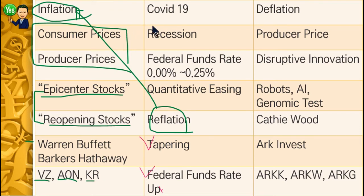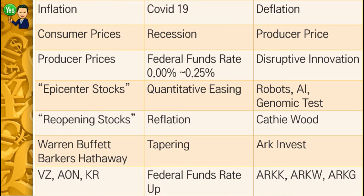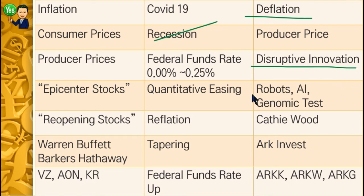Now let's talk about the other side — deflation. As I said, deflation means less cash in the market. One way we get deflation is through destructive innovation, not recession. Innovation means we have more robots and AI — artificial intelligence. They are making smart factories. Before, we relied on human labor. Now, smart factories with robots and AIs produce products more efficiently and at low cost — 24 hours a day, seven days a week.